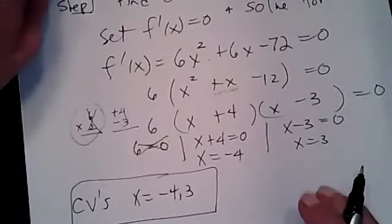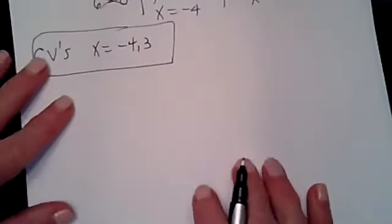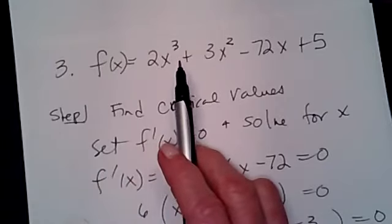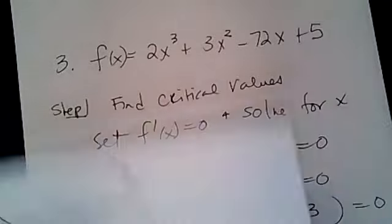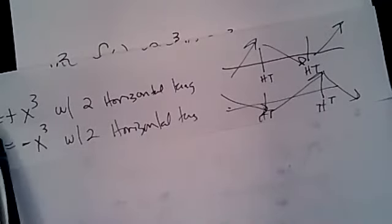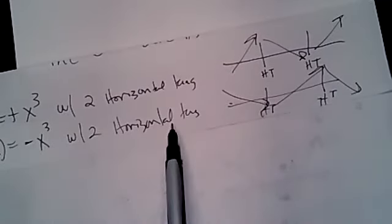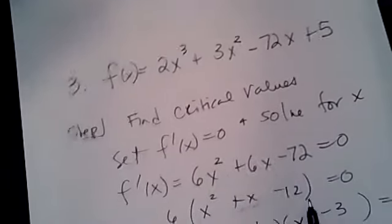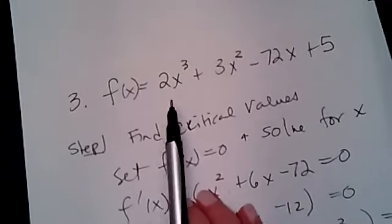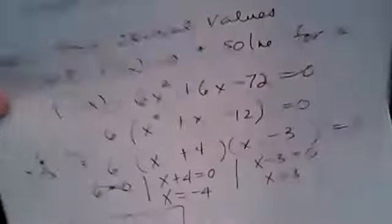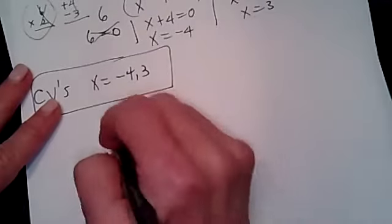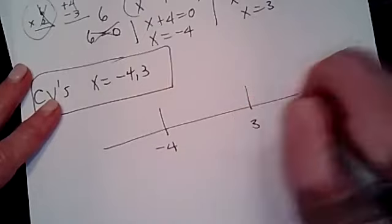Let me do the sign chart work one more time, then I'll show you a shortcut based on function shapes. A positive x³ with two horizontal tangents goes up, then down, then up. Let me verify. My sign chart has -4 and 3 on it, breaking the x-axis into three parts. I pick test numbers: -5, 0, and 4.